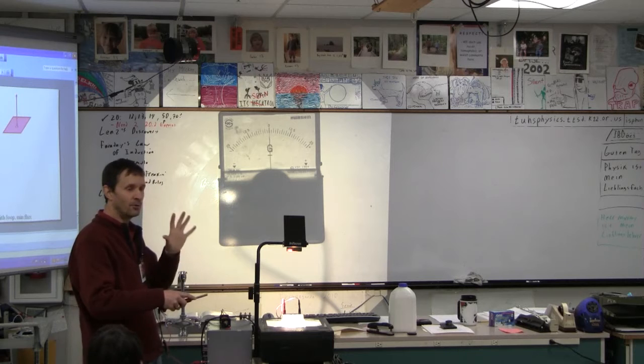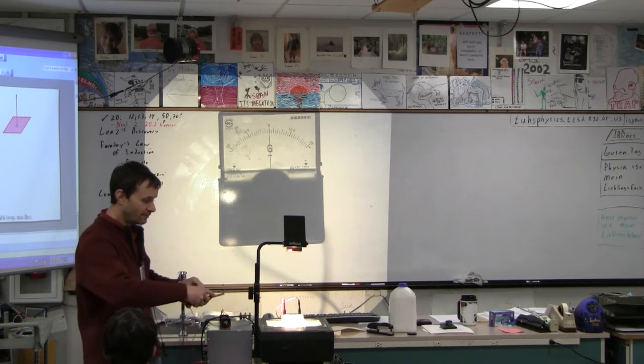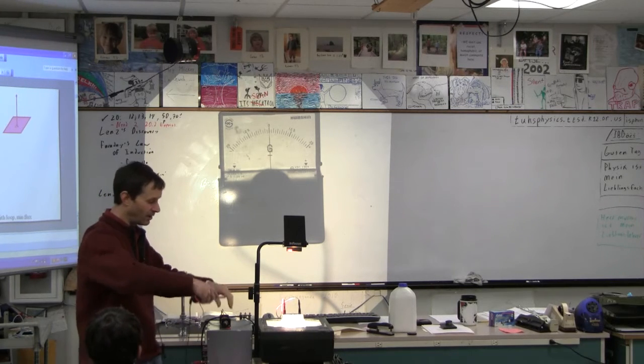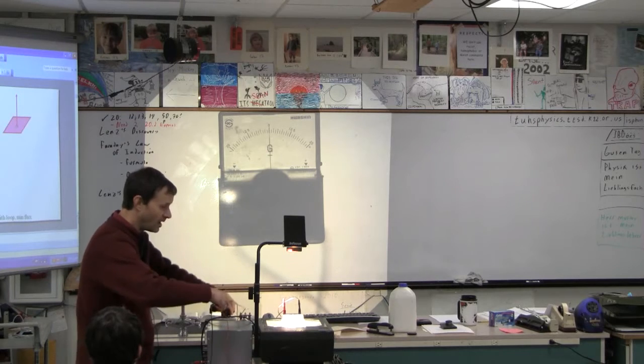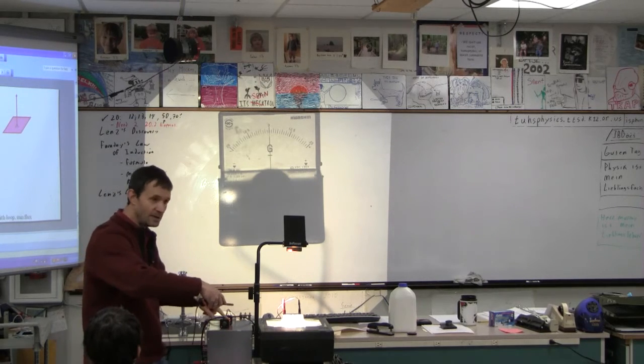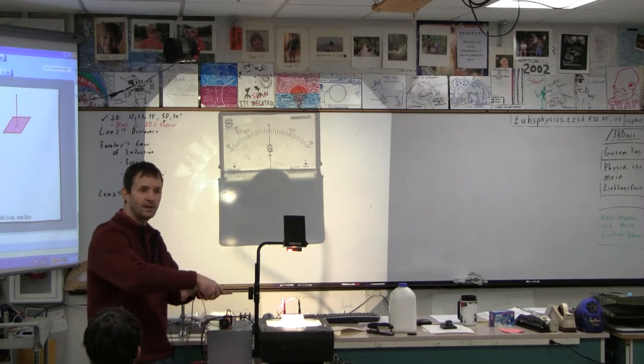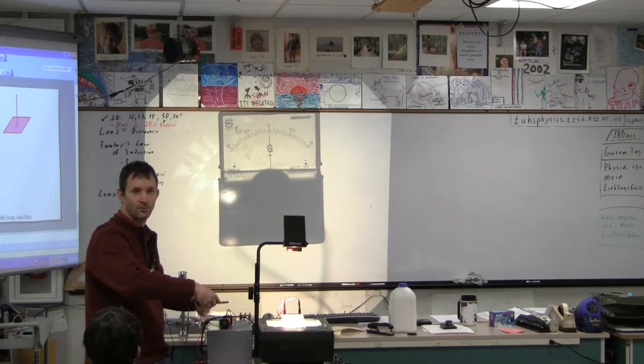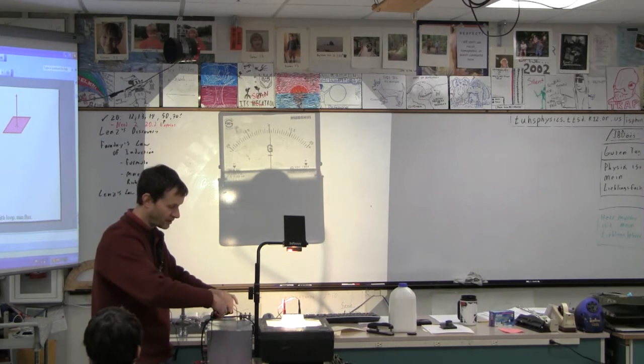So, this galvanometer, it's very sensitive. It's going to detect current. And so what I'm going to do is I'm going to place this coil inside this coil, and this is going to make a magnetic field inside that coil, and when I make a magnetic field there, current should flow in the external wire. Are we ready for this?